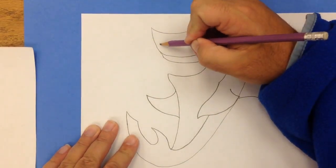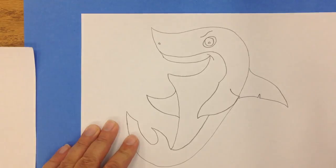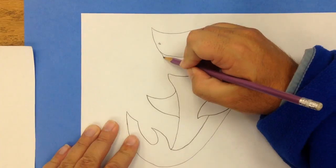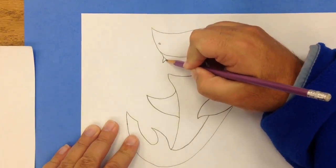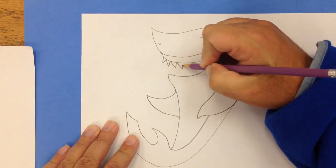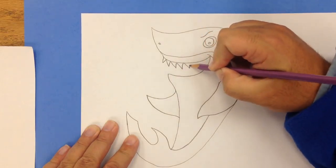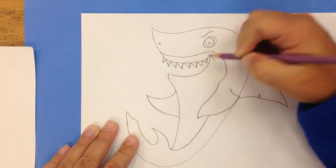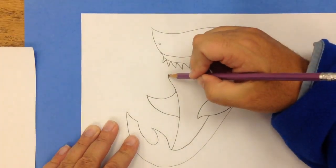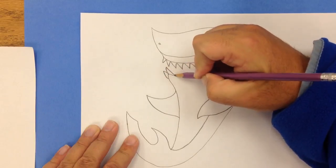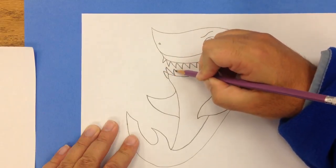Now I'm going to add a nostril right here and the fun part, filling in the teeth. So there are a lot of different ways to do this. I'm just going to make some kind of jagged zigzag lines up on top. Then down on the bottom, I'm going to have them drawn a little bigger, kind of sticking out.